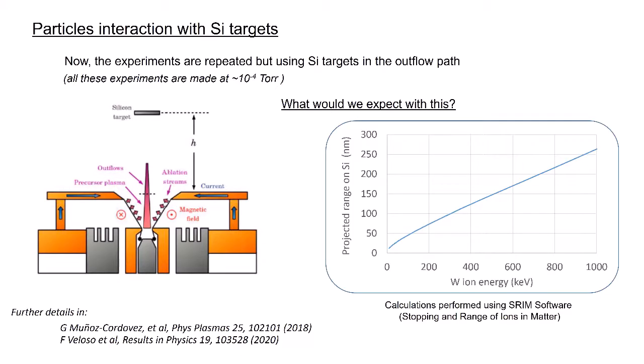Nevertheless, using the SRIM software and the incoming kinetic energy of the tungsten ions previously measured, we can calculate that the projected range of tungsten within the silicon will only reach a few hundred nanometers in depth. Once again, this indicates that the effects of the outflows will be constrained to the first layer of the silicon and not its bulk.